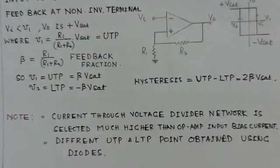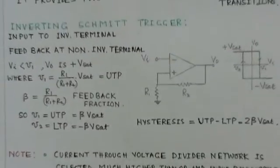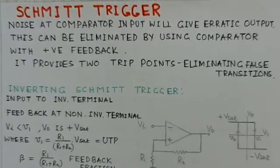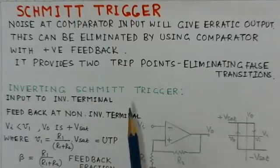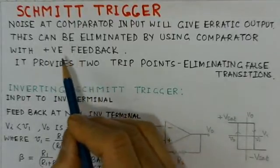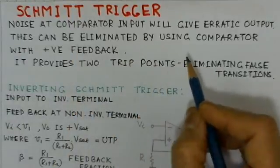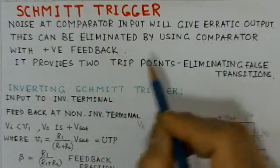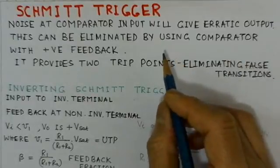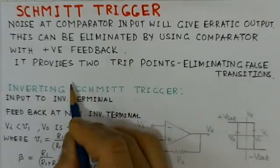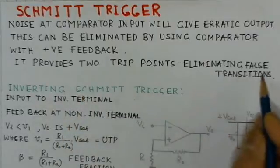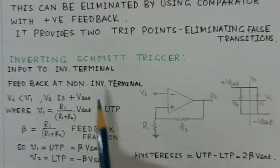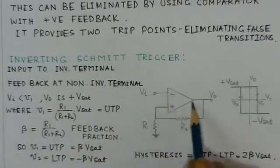The next important circuit in this category is the Schmitt trigger. If we use a comparator and the input noise is large, the comparator gives an erratic output. This can be eliminated by using a comparator with positive feedback, or a comparator with hysteresis. It provides two trip points and eliminates false transitions. We will see the circuit for an inverting Schmitt trigger.